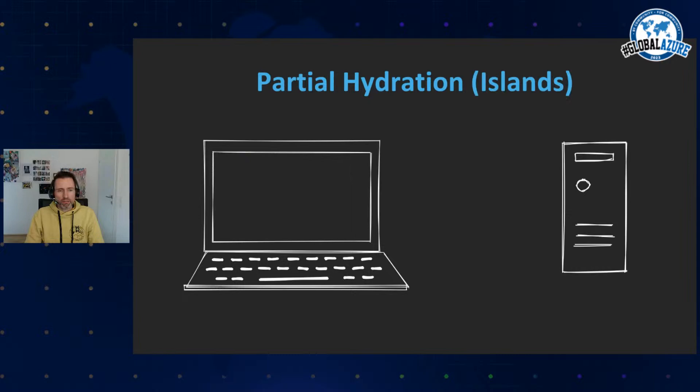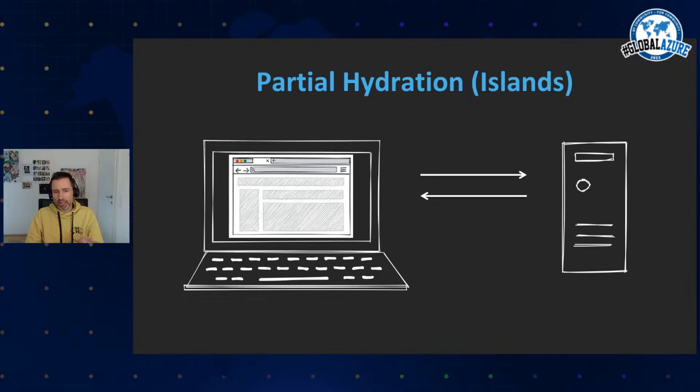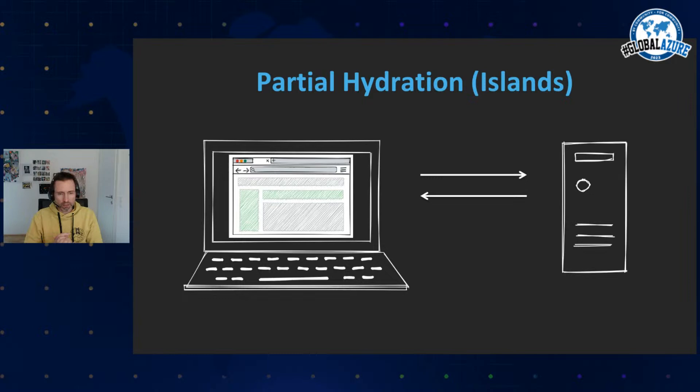To address this, people came up with partial hydration — the so-called islands pattern, which Astro uses heavily. The idea is to hydrate only parts of the page: hydrate the most important elements first, and hydrate others later when the user scrolls down or as background tasks. This works quite well, and Astro shows really great performance for websites using this approach.